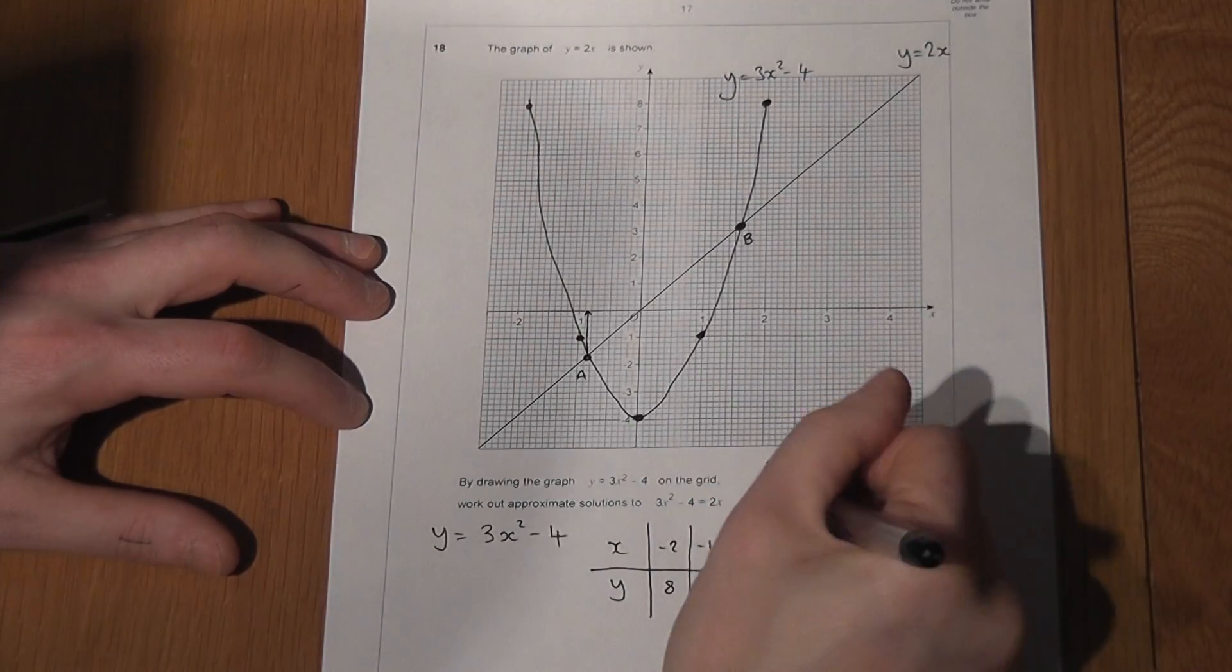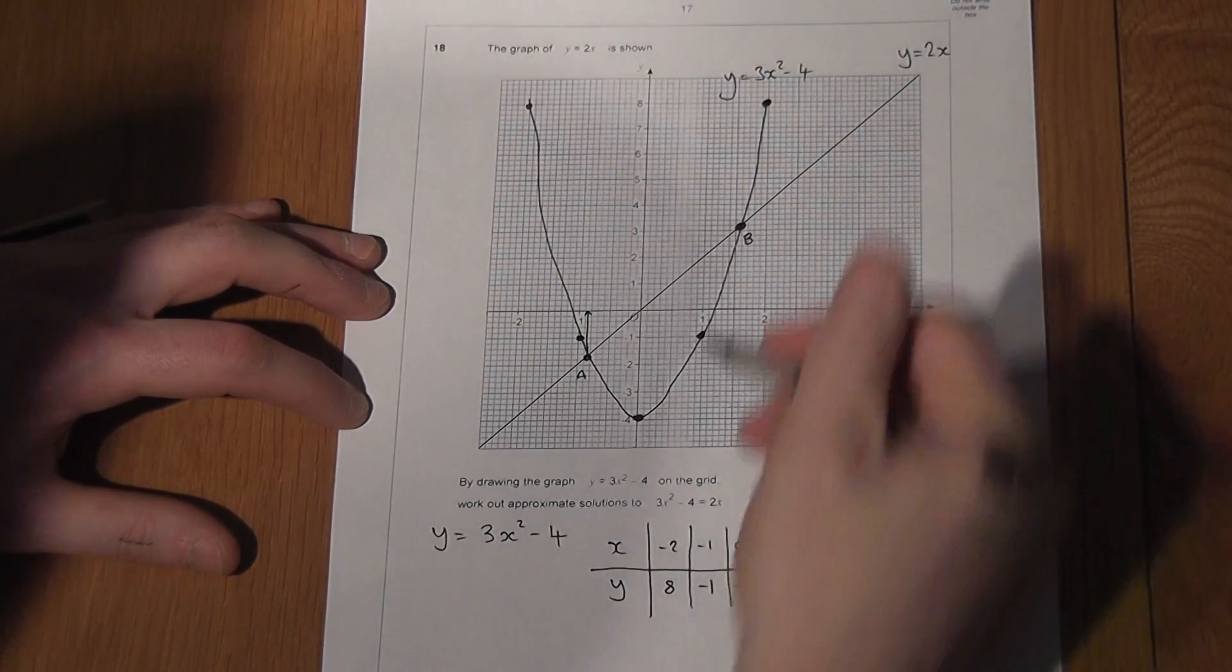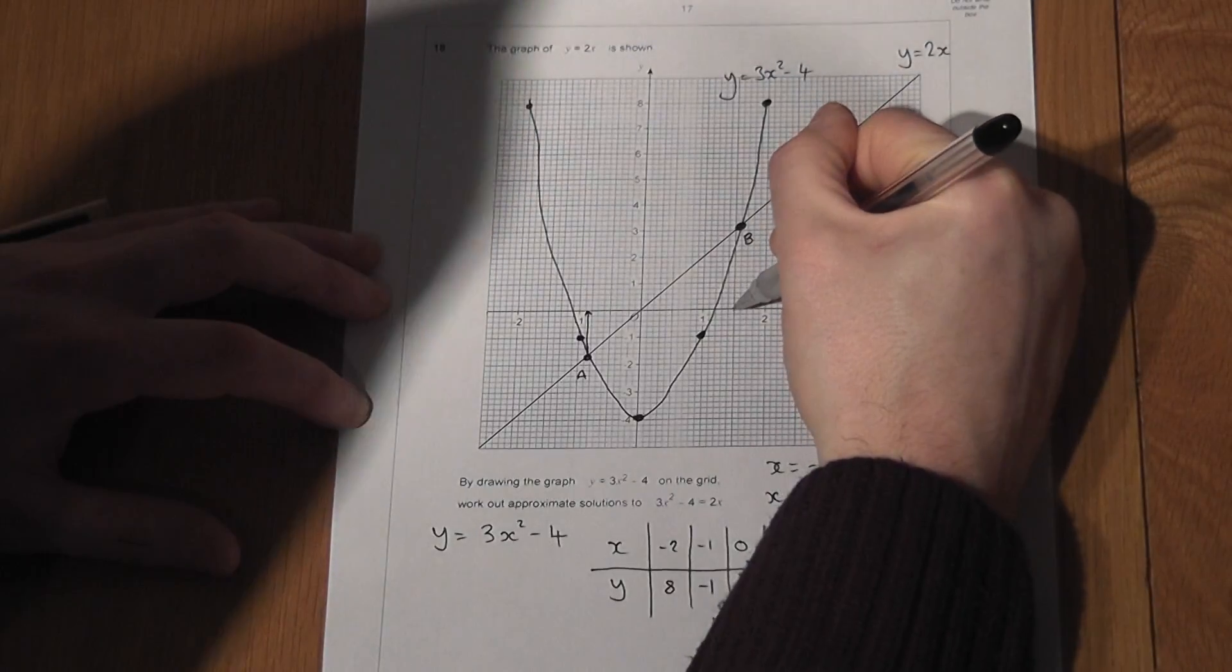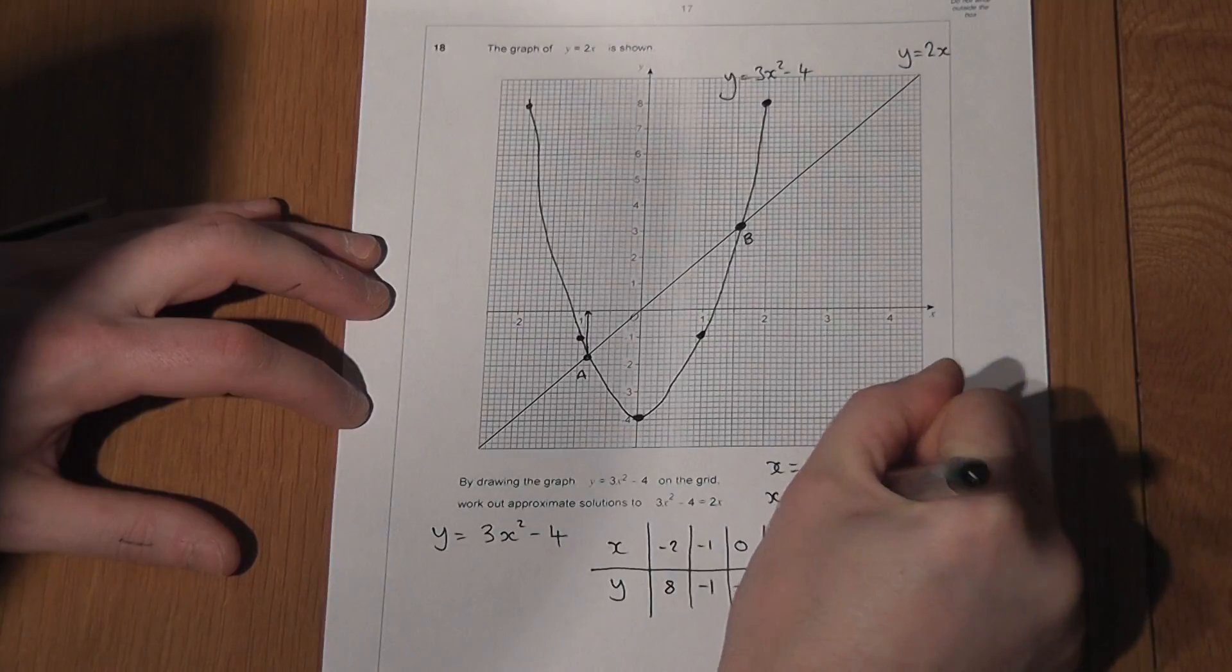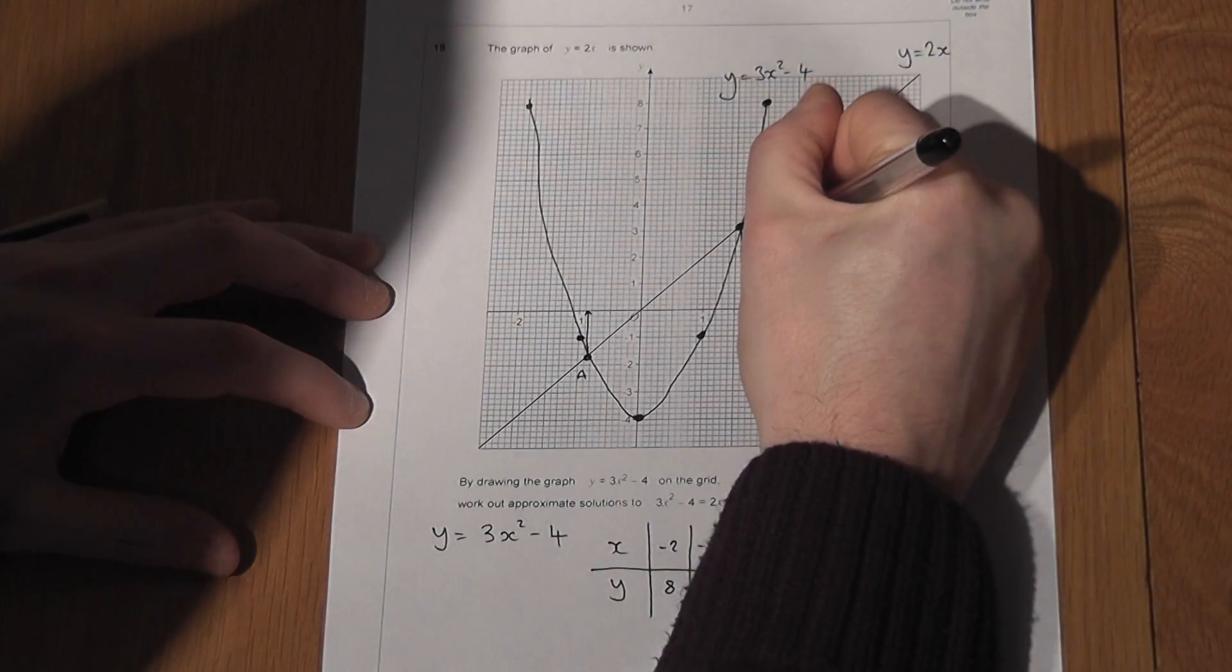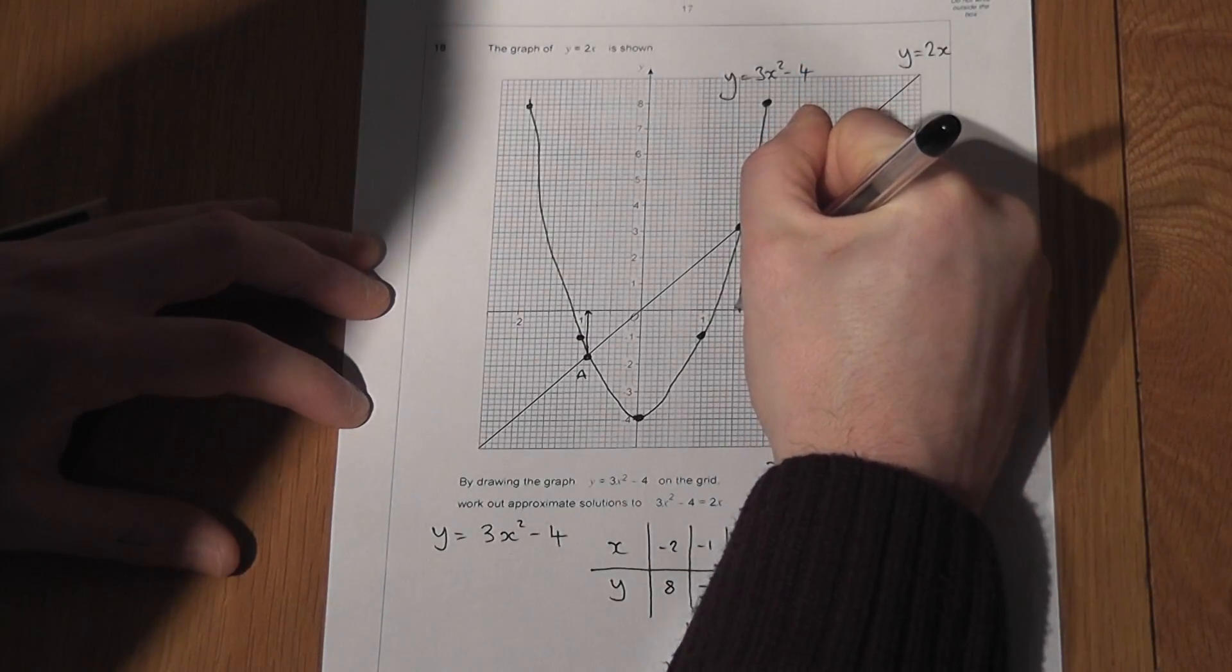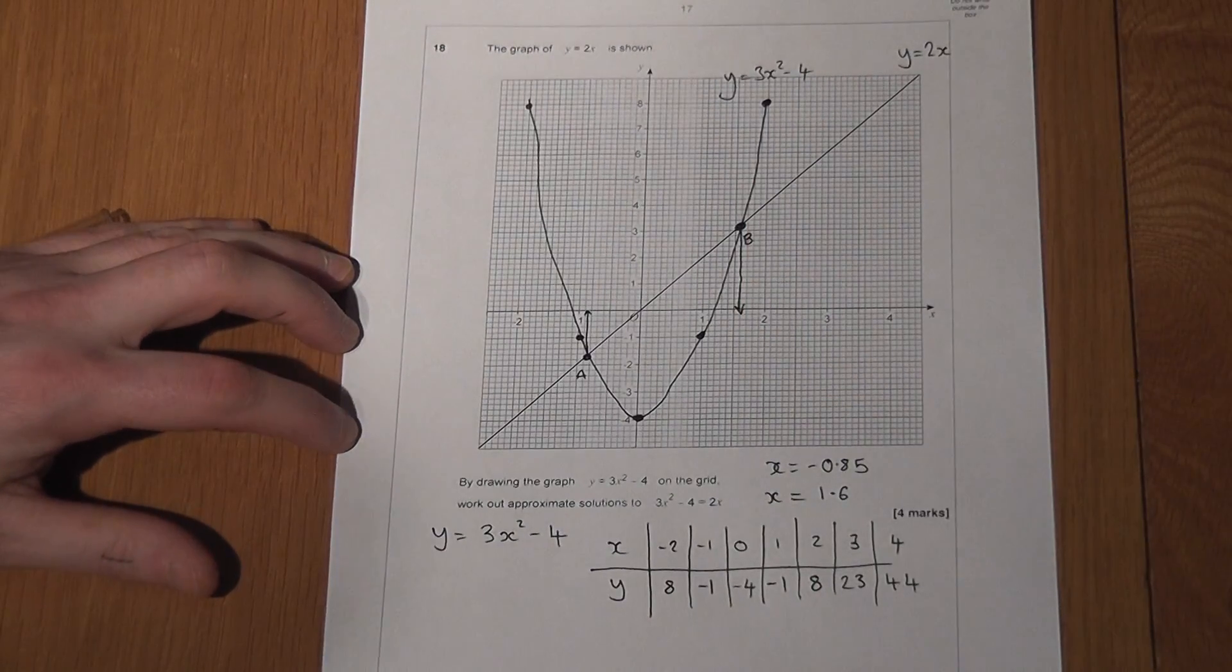And the second one, coordinate B, if I draw a line down, is at x is equal to 1.6. And again, I'll show clearly in examination what I've done to find out those two coordinates.